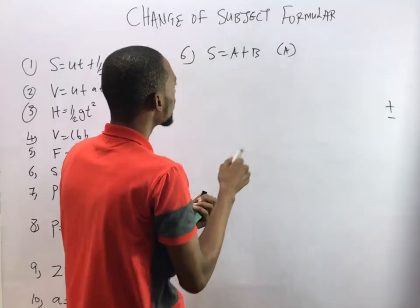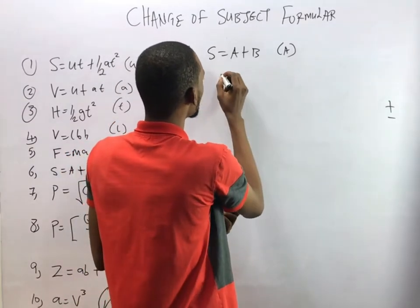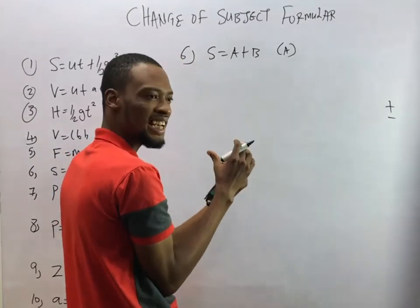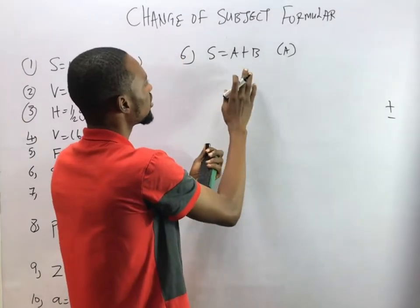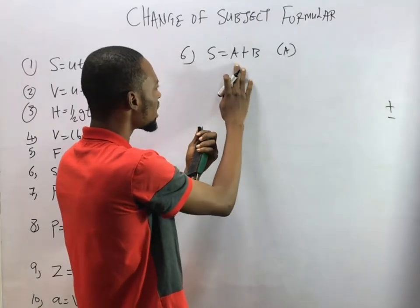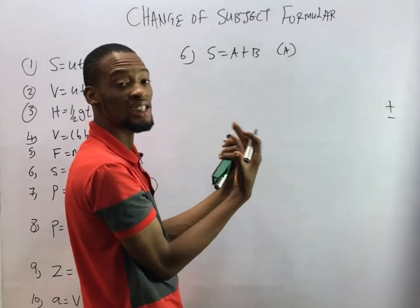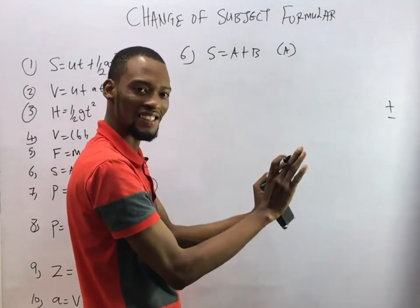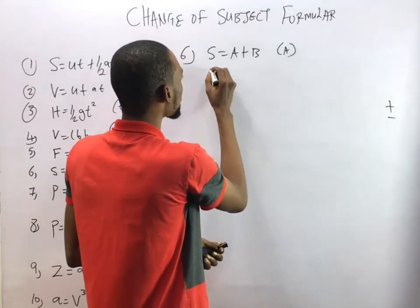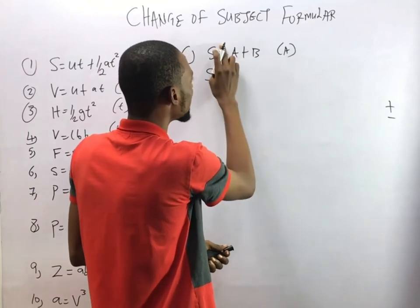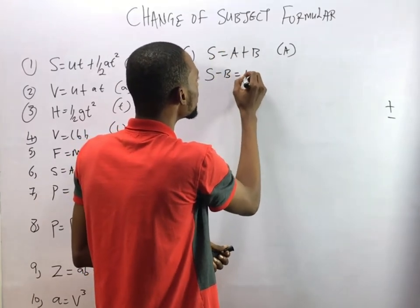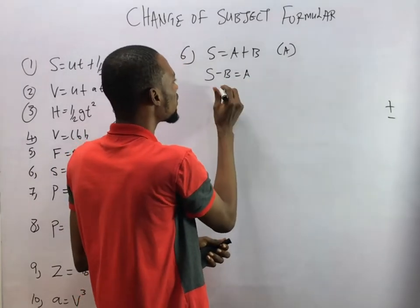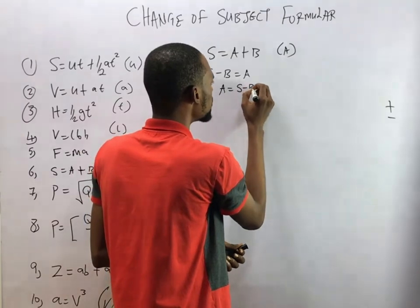In S equals A plus B, we need only A, so S and B are what we don't need. We take B to the other side, so it becomes S minus B equals A. Rearranging, A equals S minus B. We've made A the subject formula.